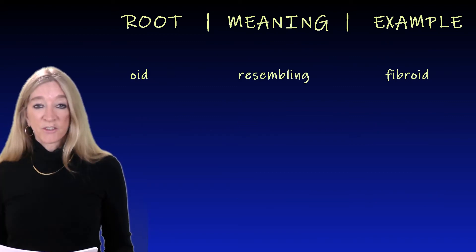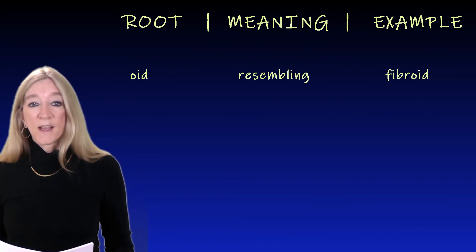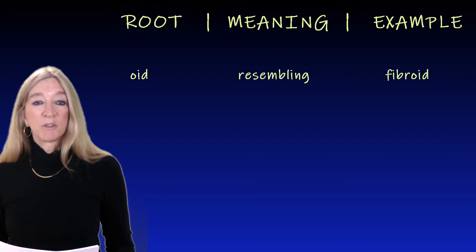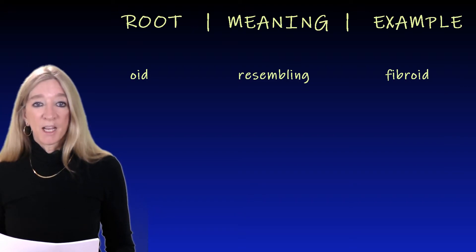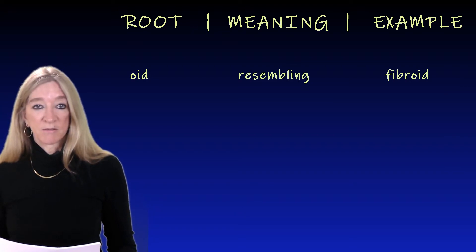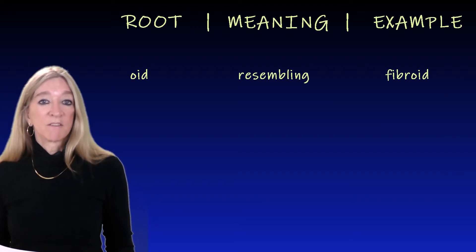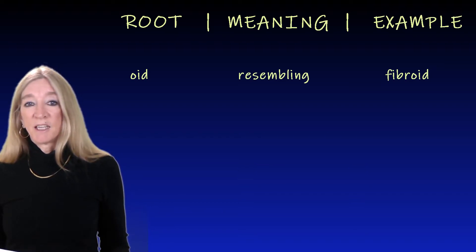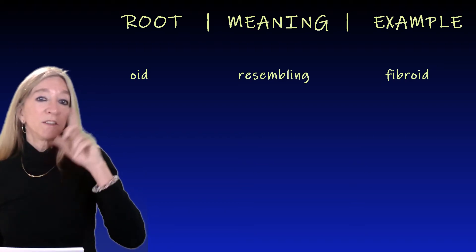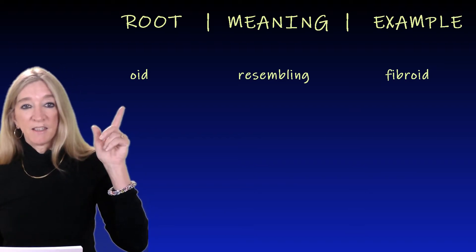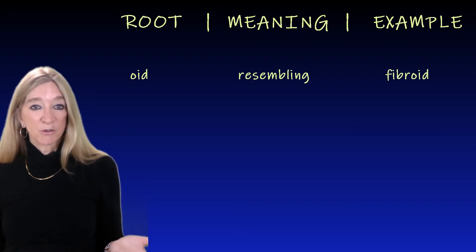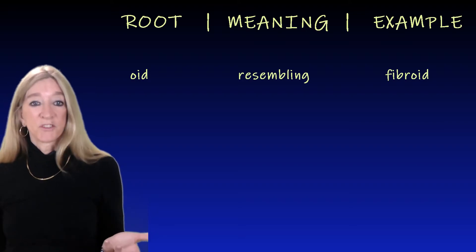The next root, 'oid,' meaning resembling. An example is fibroid, meaning resembling fiber. Examples from everyday life: ovoid, shaped like an egg; spheroid; asteroid, resembling a star.